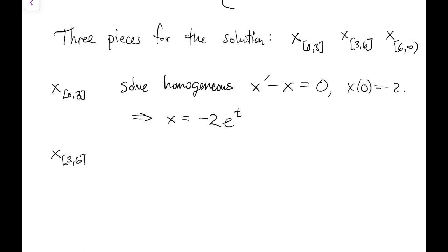Now for the next piece, the forcing function equals 5 over the interval from 3 to 6. So now we have this non-homogeneous problem to solve. And the initial value, 3 is considered the initial time for this piece. That comes from x over the previous piece evaluated at t equals 3.